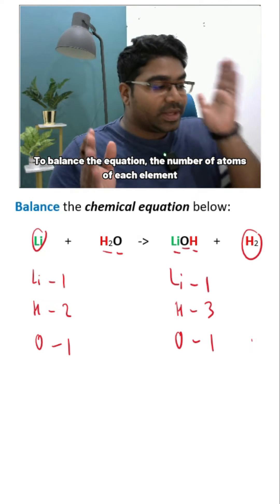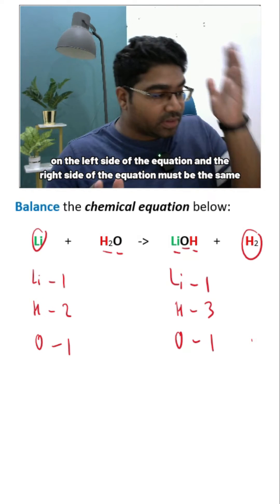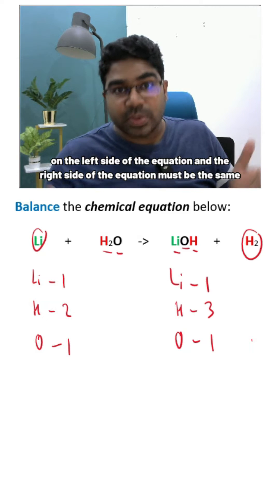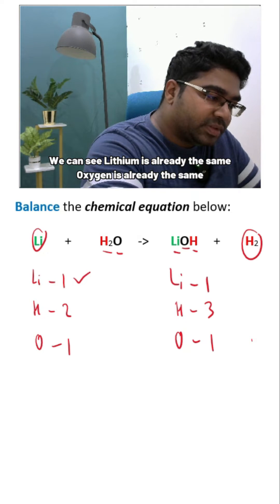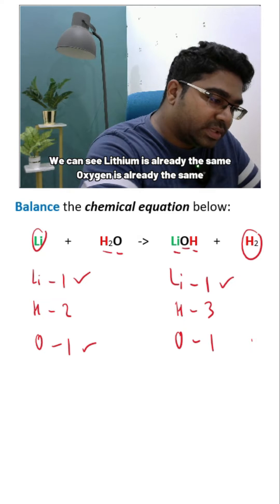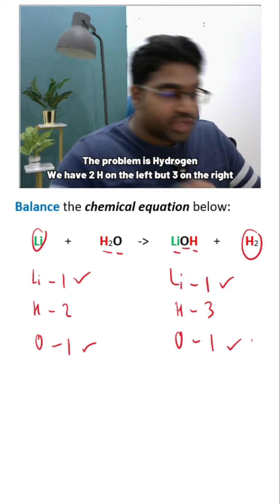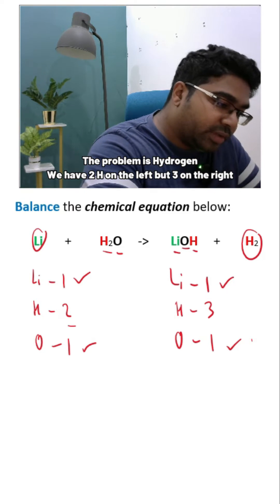To balance the chemical equation, the number of atoms of each element on the left side and the right side of the equation must be the same. We can see lithium is already the same. Oxygen is already the same. The problem is hydrogen. We have two hydrogen on the left but three on the right.